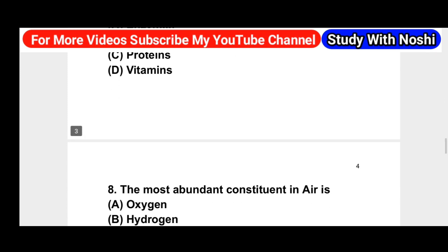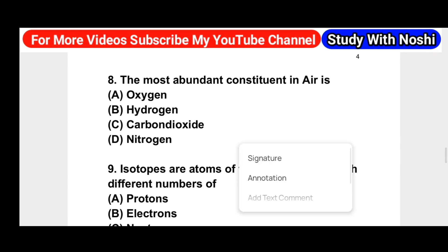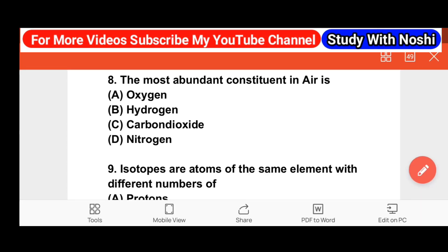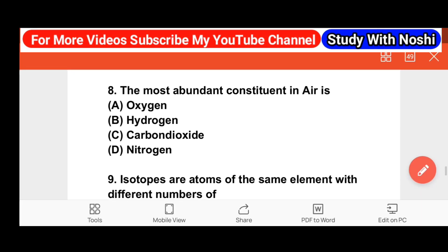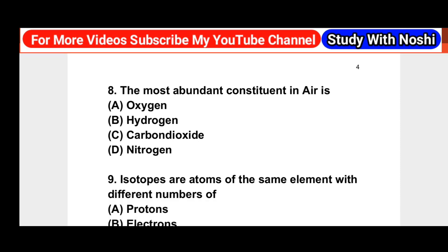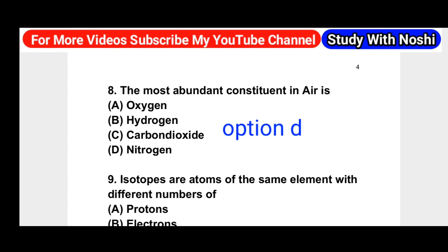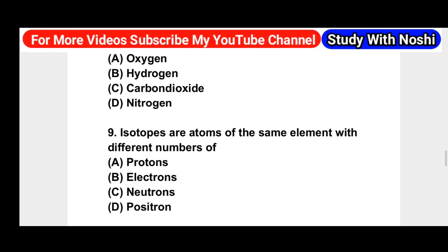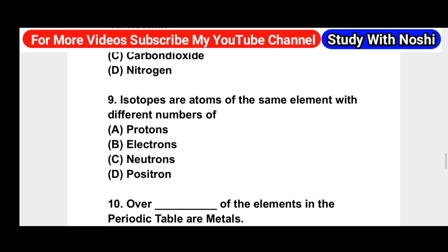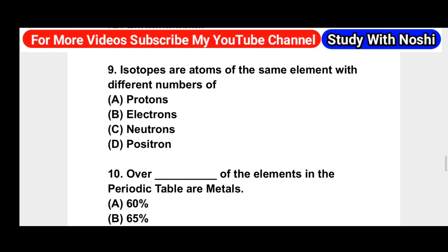Next question: the most abundant constituent in the air. Options: oxygen, hydrogen, carbon dioxide, nitrogen. Right answer is option D — nitrogen.